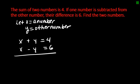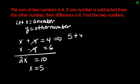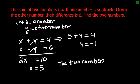This is already set up where we can use addition. Two X, the Ys go away, equals ten. So X is five. And here we have five plus Y equals four. So Y is negative one. The two numbers are five and negative one.